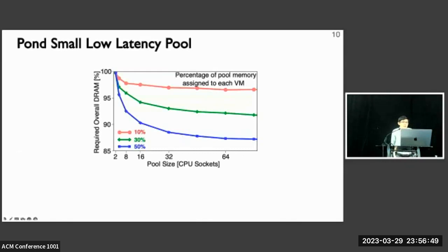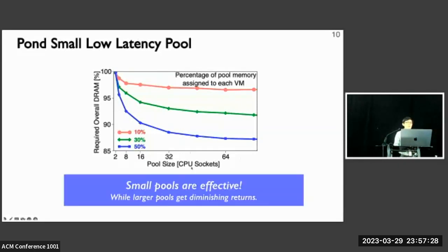First, let's look at the pooling scope. We start with a Stranding analysis to decide the effectiveness of pooling. Here we try to allocate a fixed portion of the VM memory from the pool and measure the overall DRAM savings over different pool sizes shown in the x-axis. We have three lines representing 10, 30, or 50% of memory being fixed in the pools and y shows the overall DRAM needs. We can see the memory requirement is going down because we average the peak requirement here. More importantly, we find that even with a small pool of 8 to 16 sockets, they are quite effective for DRAM savings. A larger pool would give us diminishing returns due to the increased cost and latency by using switches.